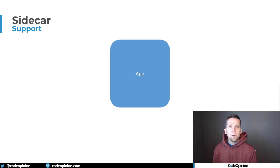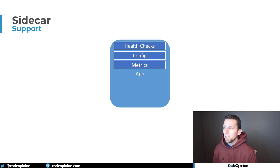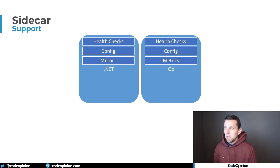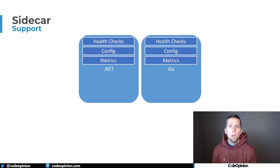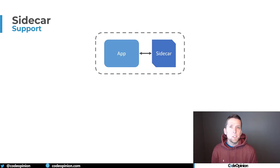Whatever platform you're on, you're going to use different libraries, packages, or SDKs to provide common functionality like health checks, configuration, or metrics. You're leveraging these libraries and implementing different concerns, and these all live within the executable process of your service. For example, one service written in .NET and another in Go still have the exact same concerns, but because we're leveraging platform-specific libraries, we have to implement them completely separately. Wouldn't it be nice to have a common way to deal with all these shared concerns?